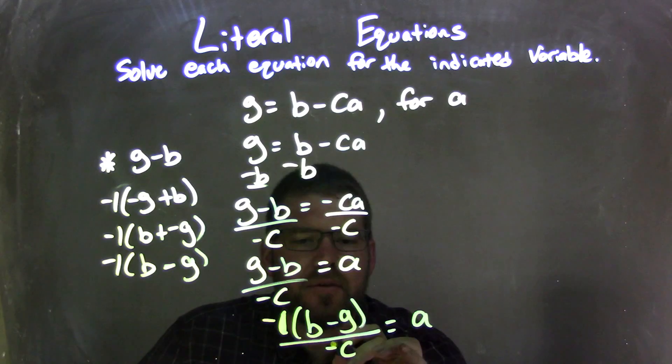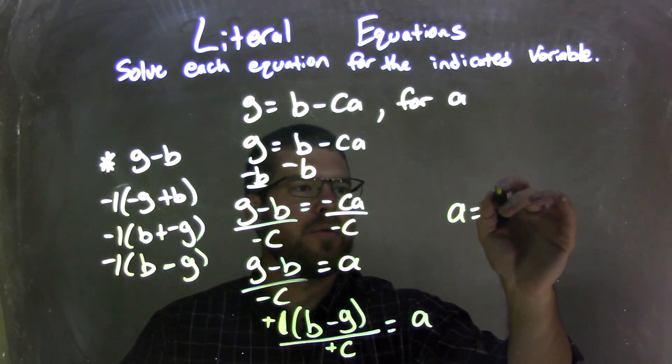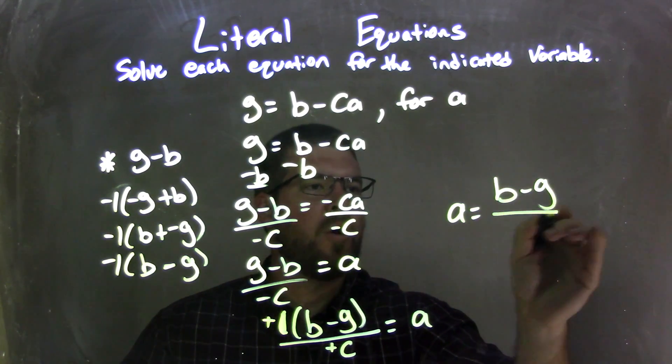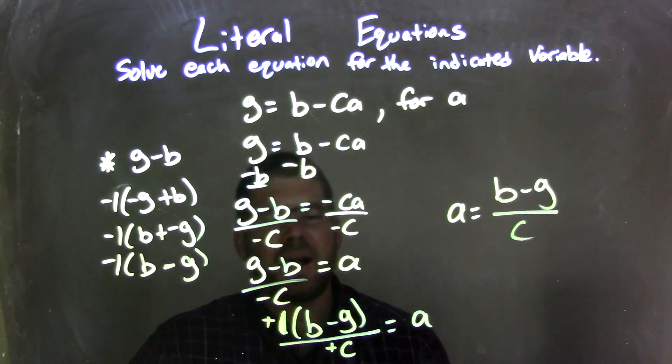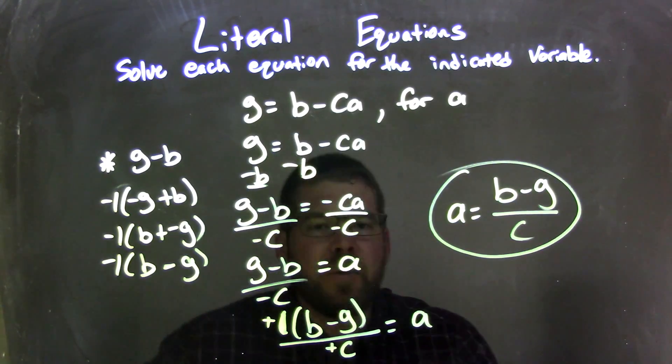The negatives will cancel, make them positive. And I can rewrite this to have A come first. And so we have A equals B minus G over positive C. And I like to do that because I don't necessarily want to have negatives in the denominator. And that would be my final answer.